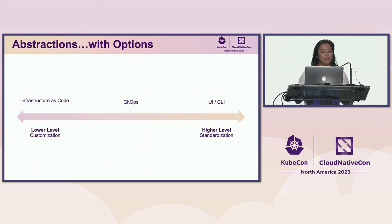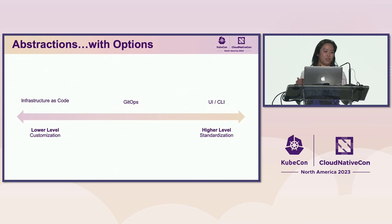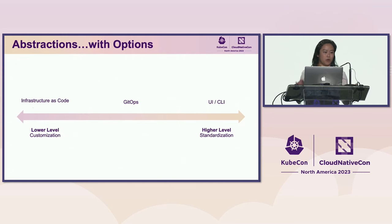In the end, you have abstractions with options. You have many different options in the form of a platform interface, and you can choose whichever one you want. But at the end of the day, you have many, many, many of them that you'll have to support. Whether it's Infrastructure as Code, to GitOps, to UI/CLI, a lot of the ecosystem you see now has all of them for you to use and for your developers to be happy. Thanks.